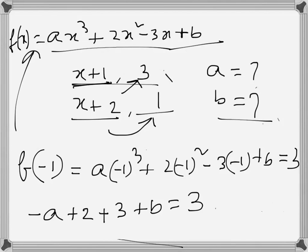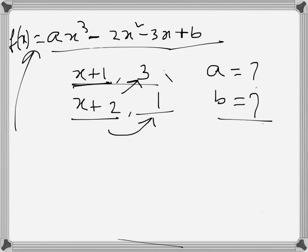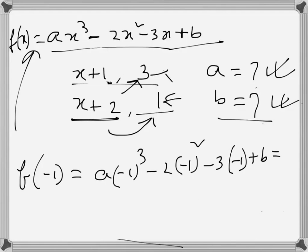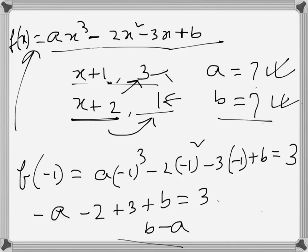Correcting: f(x) = ax³ - 2x² - 3x + b. When divided by x + 1 the remainder is 3, and by x + 2 the remainder is 1. Applying the Remainder Theorem with f(-1): a(-1)³ - 2(-1)² - 3(-1) + b = 3, so -a - 2 + 3 + b = 3. This gives b - a = 2, which is our first equation.